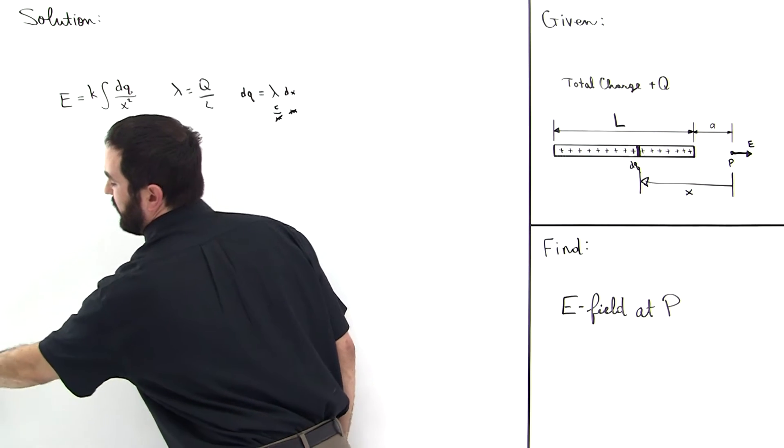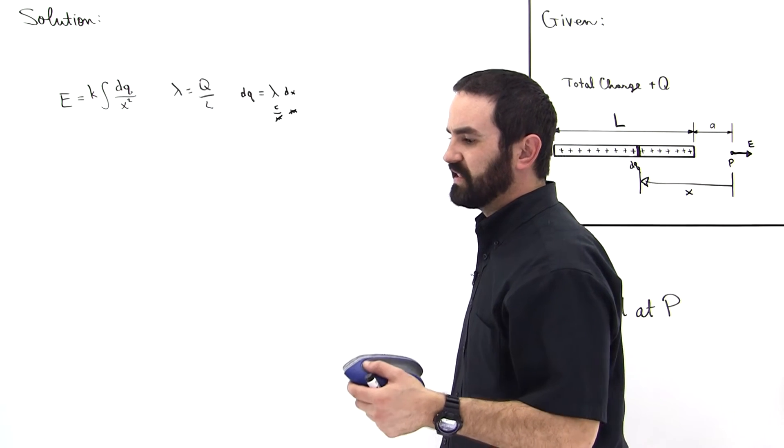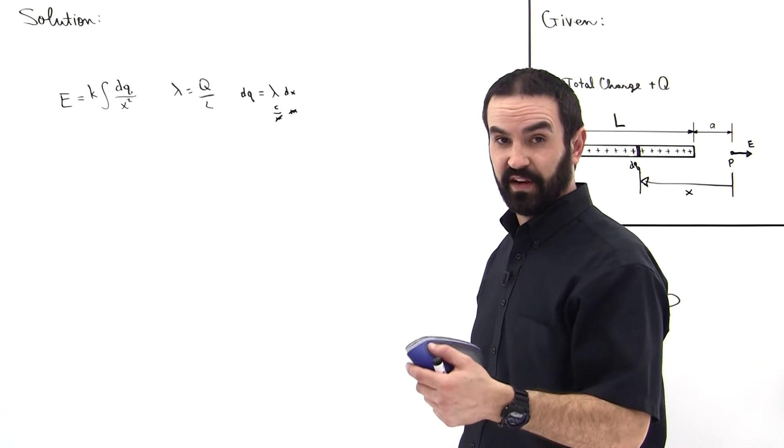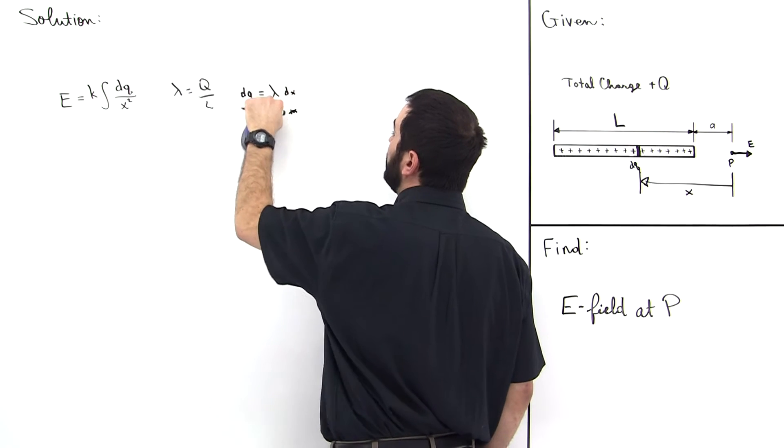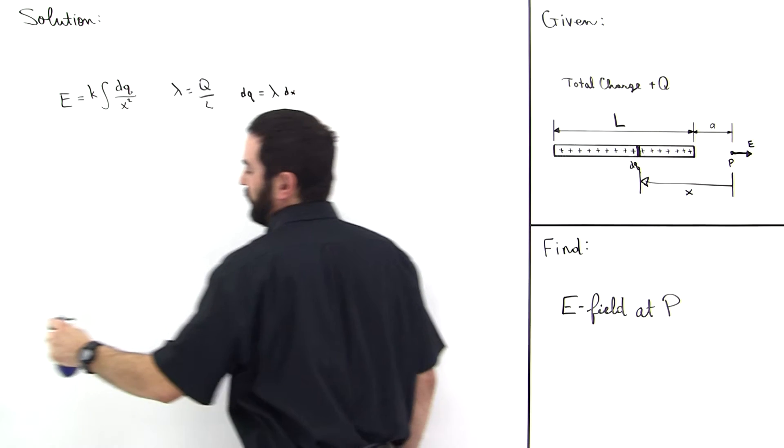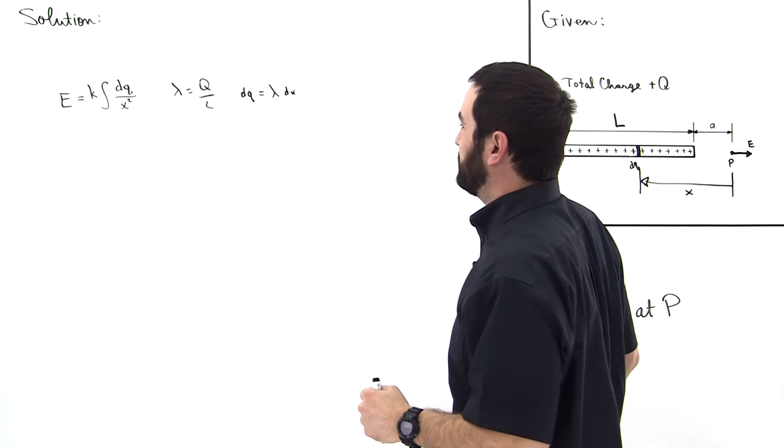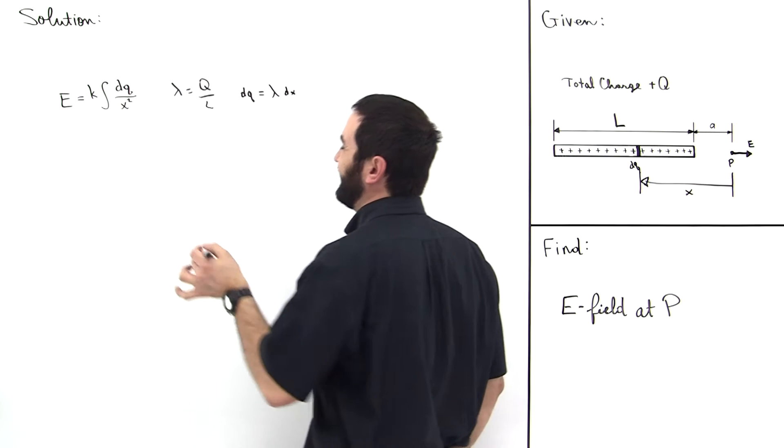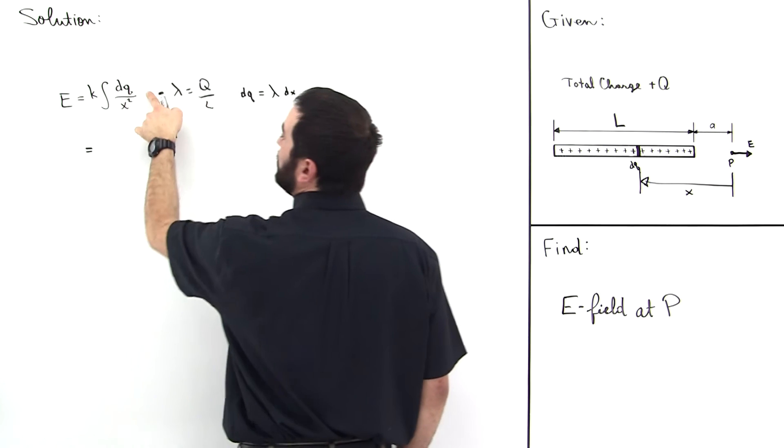You always want to make sure that your units match up whenever you're doing integrations, because that will help you to at least know that you're in the ballpark. At least you've got your units right. If you don't have your units right, you don't have the answer right. You're probably doing something incorrect. So dQ is equal to Lambda dX. We have K times the sum of Lambda dX over X squared.